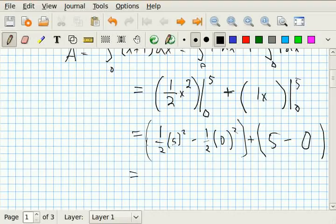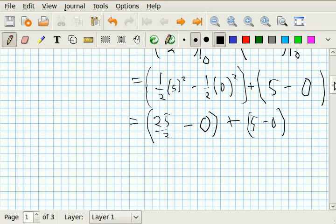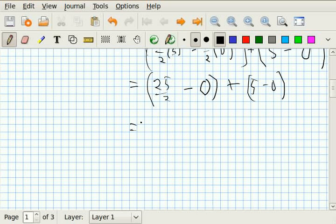And if you see here, what we get, it's going to be, well, let's see, that's 25 times 1 half, 25 over 2, minus 0, plus 5 minus 0. And just like it was last time, this is 25 over 2 plus 5, which is 10 over 2. So we get 35 over 2 square units.